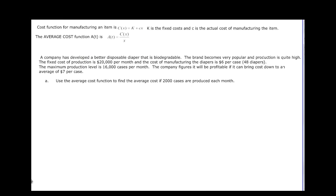Second example. We have this cost function again. C(x) is the original cost of manufacturing the item. Then we've got fixed costs, c is the actual cost, and we have this average. A company develops a better disposable diaper, and the fixed cost in production is $20,000 per month, and the cost of manufacturing the diapers is $6. By the way, this should actually be a(x), that's a typo. When we have $20,000 per month, that's our k, and $6 is our c above.